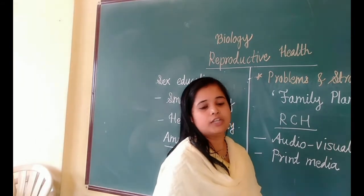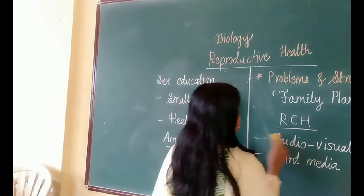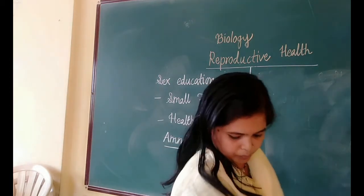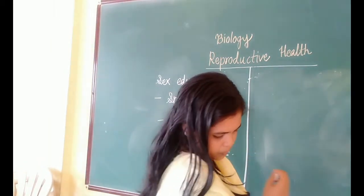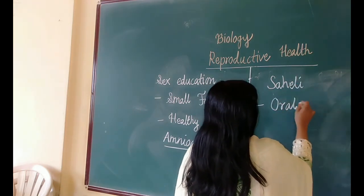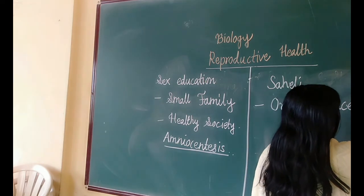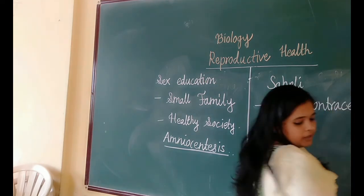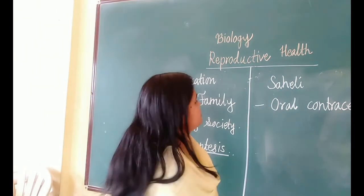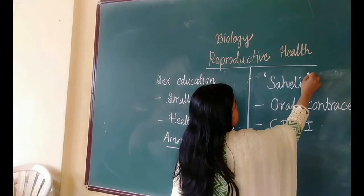You are familiar with the child immunization programs in India. In India, there is research on various reproduction-related areas. You might have heard about the tablet Saheli. Saheli is an oral contraceptive pill which helps to reduce family size. It has been developed by Indian scientists at the Central Drug Research Institute (CDRI) in Lucknow. They have developed this oral contraceptive called Saheli.